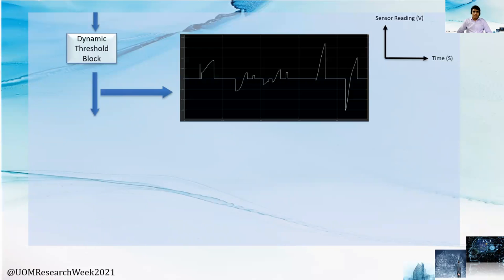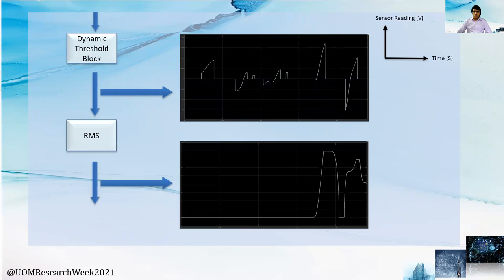Next, we send this data through a dynamic threshold block. This function is developed such that it can identify the variations of the incoming signal to determine whether it is noise or a fault condition. It uses a dynamic threshold value defined by itself. Once it detects a fault condition, the signal is released to go through the final RMS block, which provides a smooth positive-sided signal for data extraction.